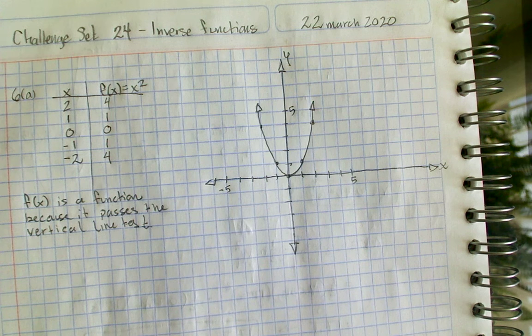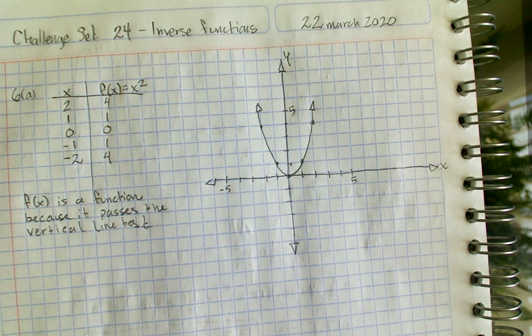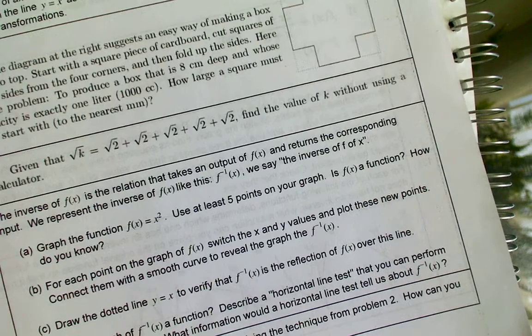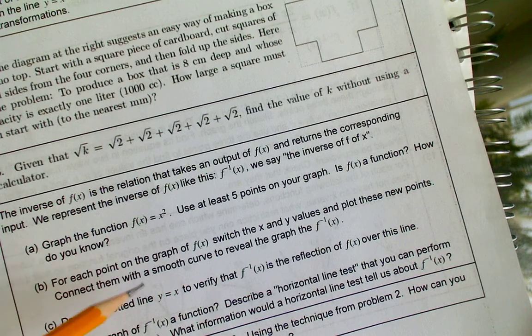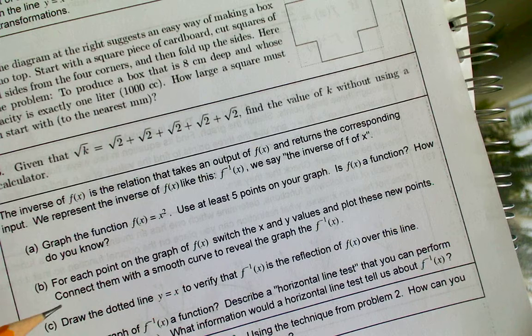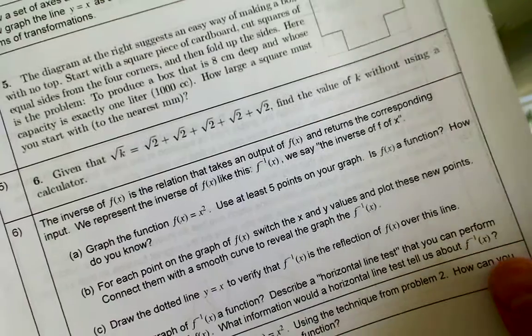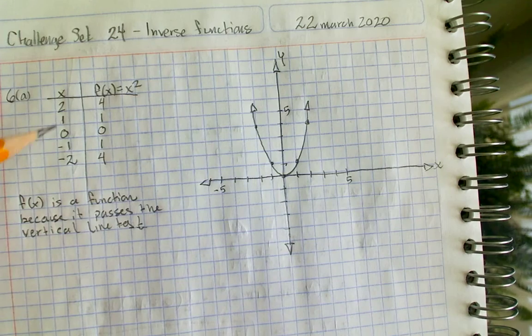Now in part B it says for each point on the graph of f of x, switch the x and the y values and plot these new points and then connect them with a smooth curve to reveal the graph of the inverse of f of x. So let me do that.